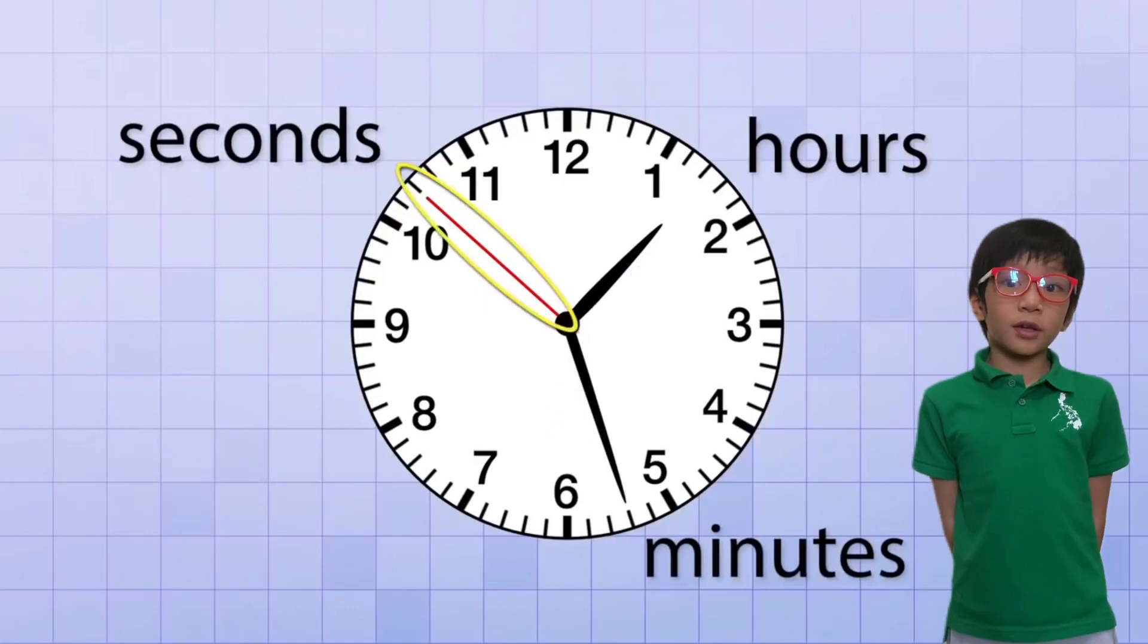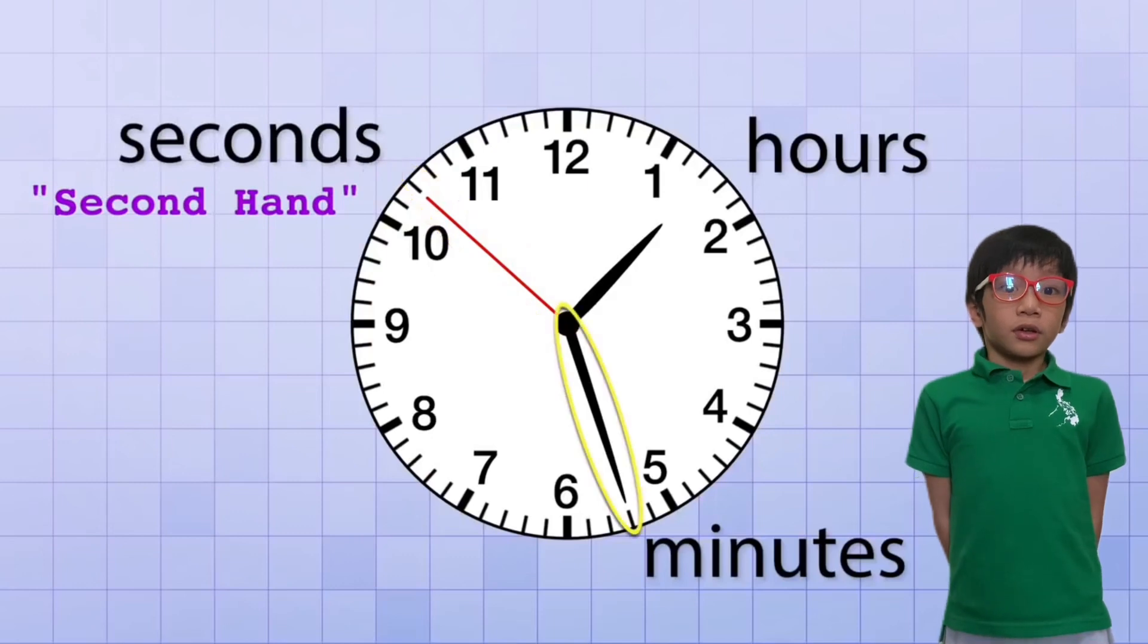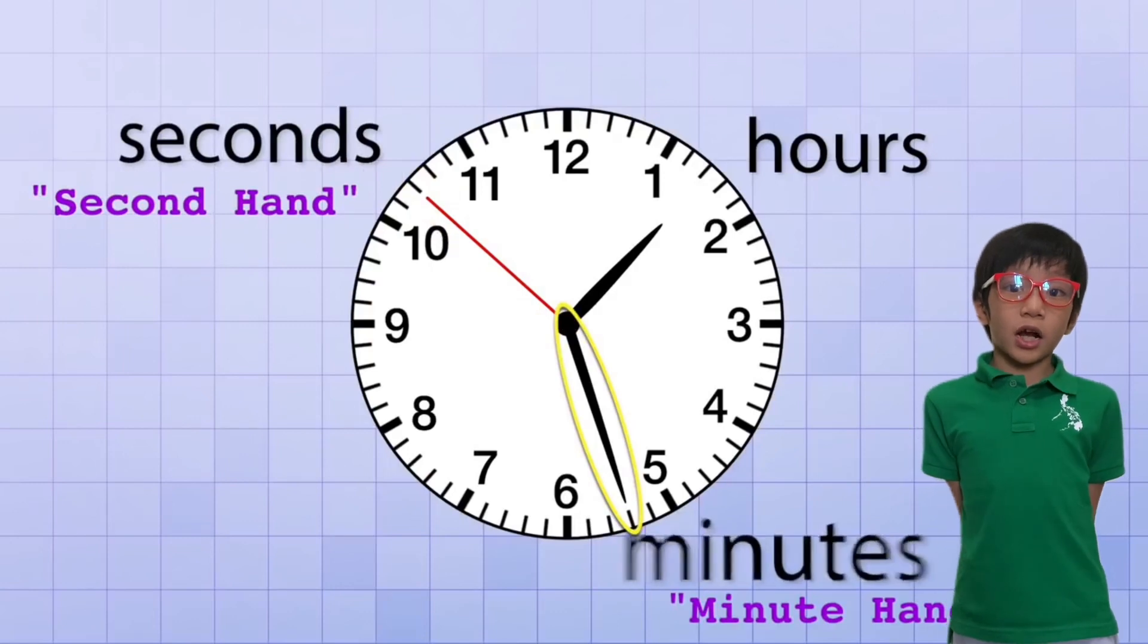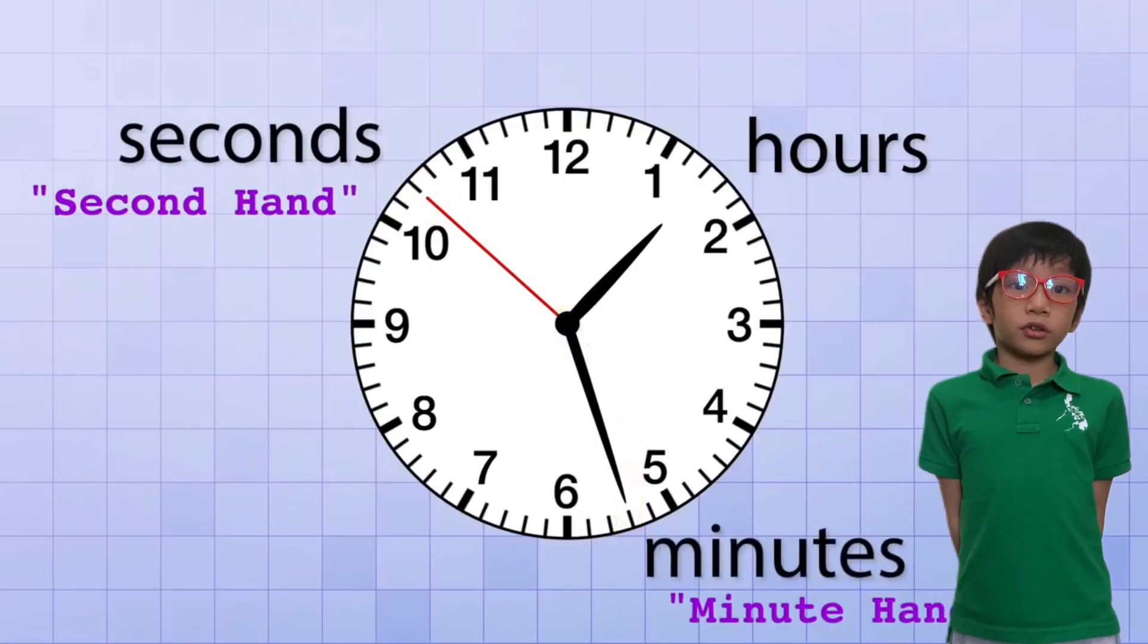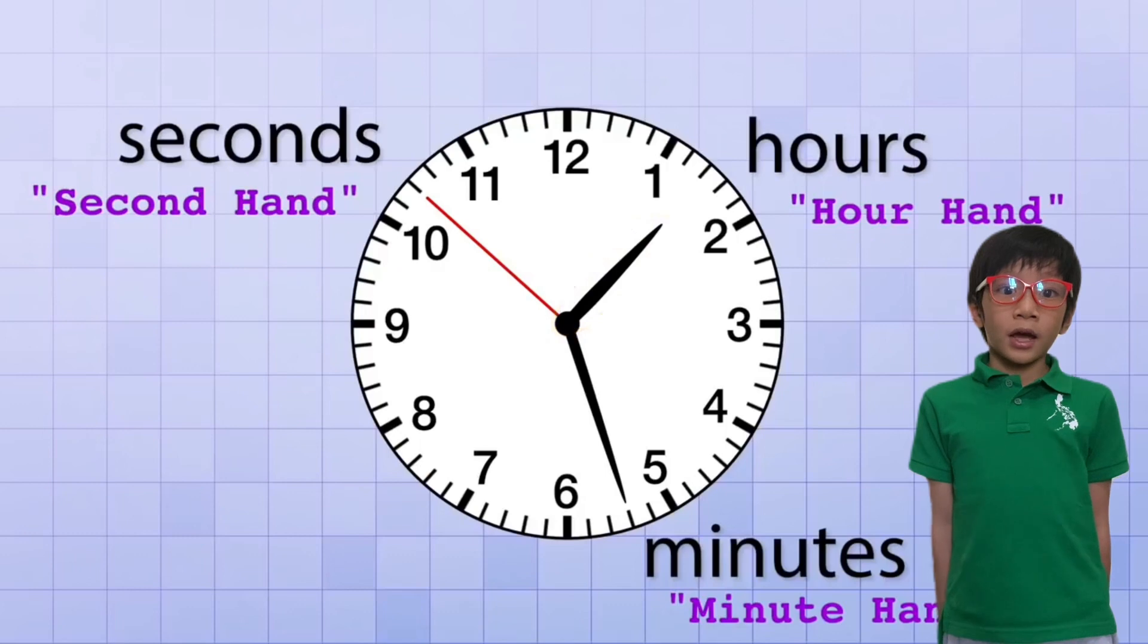The thin red pointer is called the seconds hand because it helps us keep track of the seconds. The longer black pointer is called the minutes hand and it helps us keep track of minutes. And the shorter black pointer is called the hours hand because it helps us keep track of the hours. And the circle itself is called the clock face.